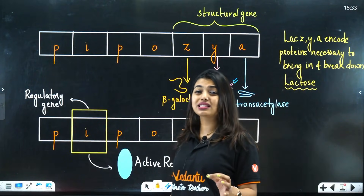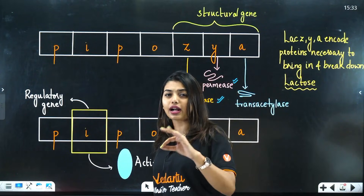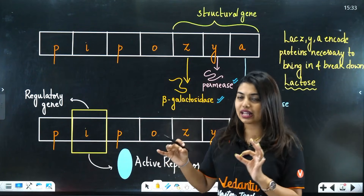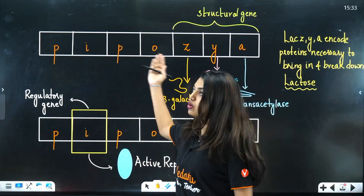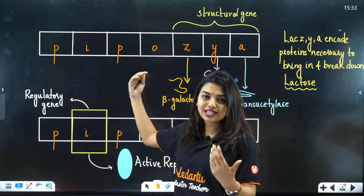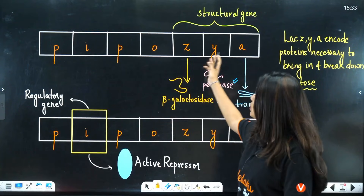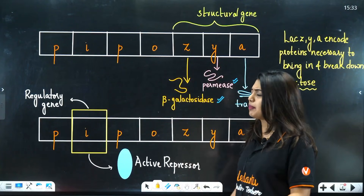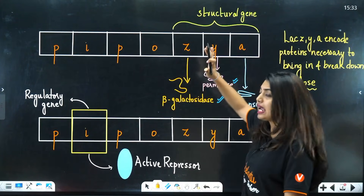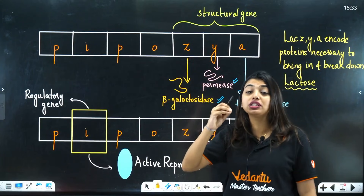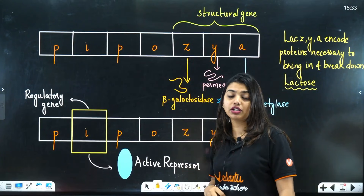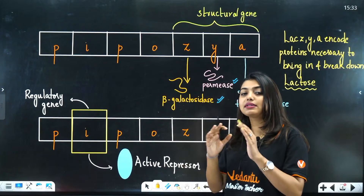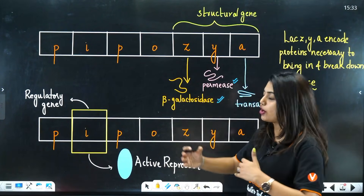From the name 'lac' you understand it has something to do with lactose. The lac operon concept follows the order P-I-P-O-Z-Y-A — this is how to remember it. Z, Y, and A are the structural genes, each releasing specific enzymes to perform certain functions.